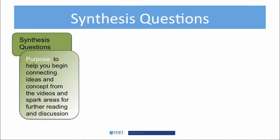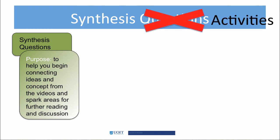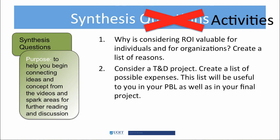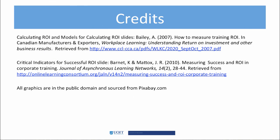There are two activities for this video. Come prepared to the tutorial with a list of reasons that ROI is valuable for individuals and organizations. Next, think about a T&D project and create a list of possible expenses — this list will be useful to you in your PBL and your final assignment. Be prepared to share your work on Adobe Connect so we can all discuss it. Determining ROI is critical for all T&D programs, and following the steps outlined in the video are just the beginning. In the next video, we'll look at the pros and cons associated with ROI. See you then!